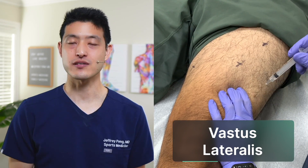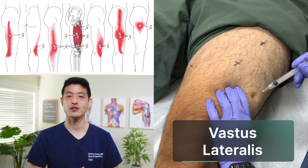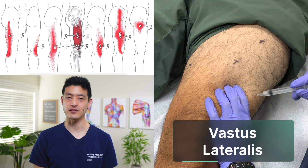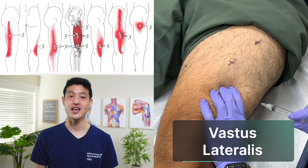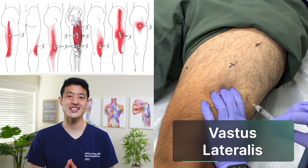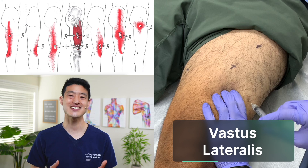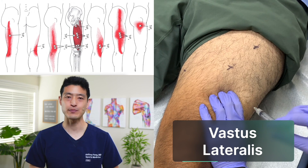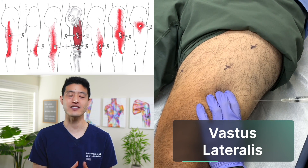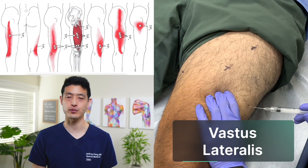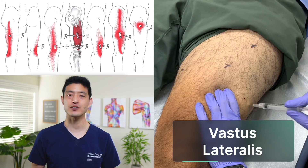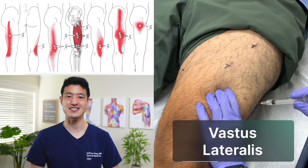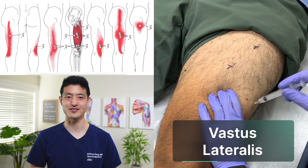The vastus lateralis muscle is part of the quadriceps muscle and is located in the outer part of the thigh. Many people who are diagnosed with a tight IT band also have underlying trigger points located throughout the entirety of their vastus lateralis muscle.